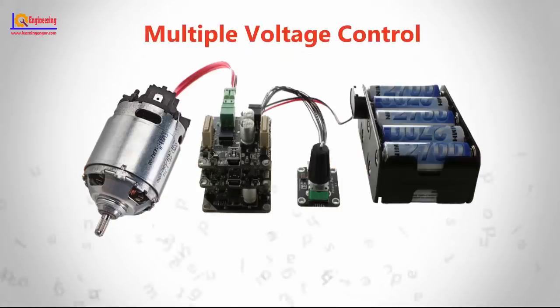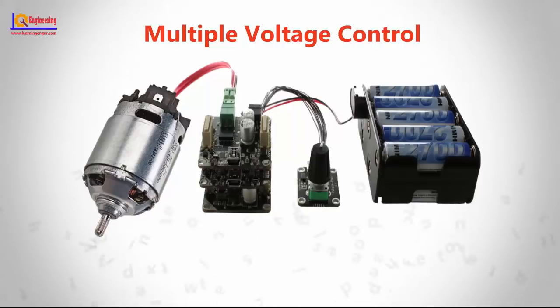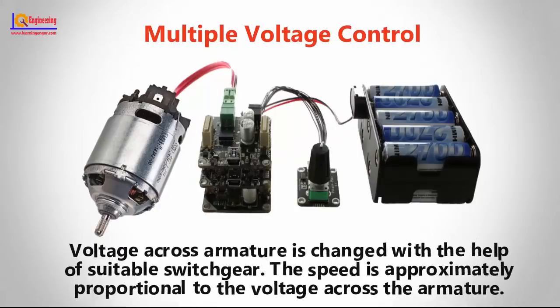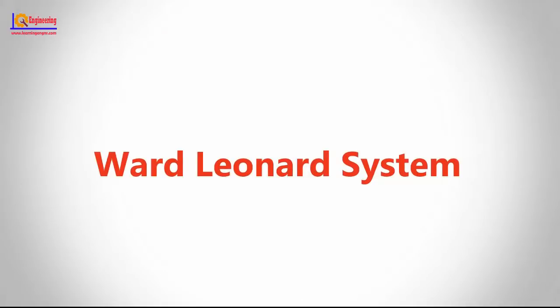In the multiple voltage control method, the shunt field is connected to a fixed exciting voltage and the armature is supplied with different voltages. Voltage across the armature is changed with the help of suitable switchgear. The speed is approximately proportional to the voltage across the armature.